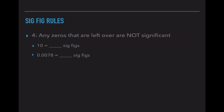Rule four essentially states any zeros that are left are not significant. For the number 10: the 1 is significant by rule one. There is no decimal, so we cannot use rule two. There is no second non-zero, so we cannot use rule three. So 10 has one sig fig.